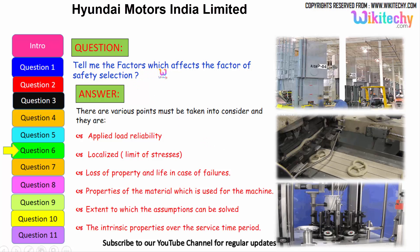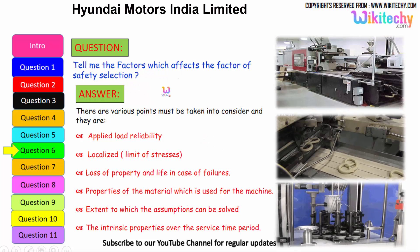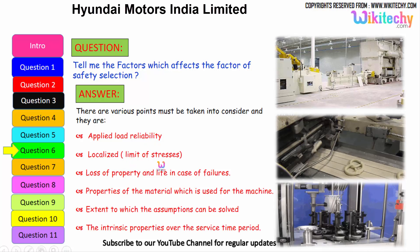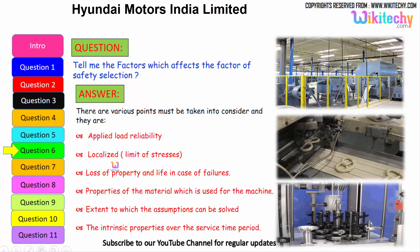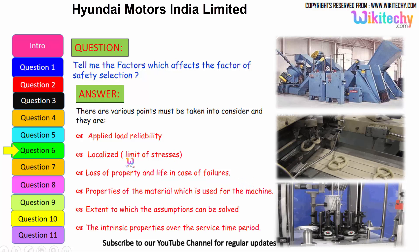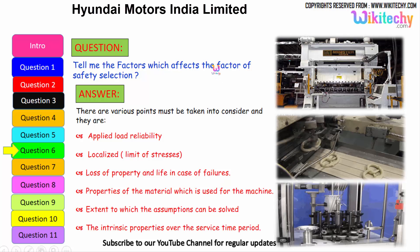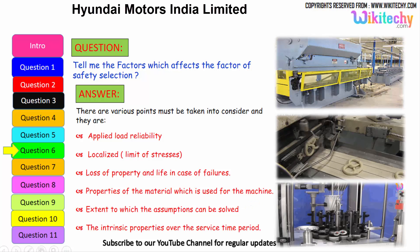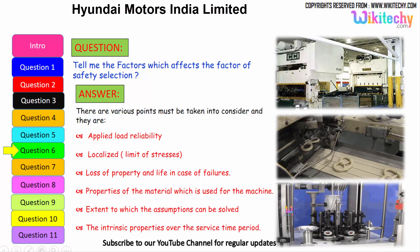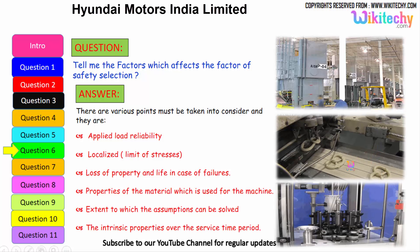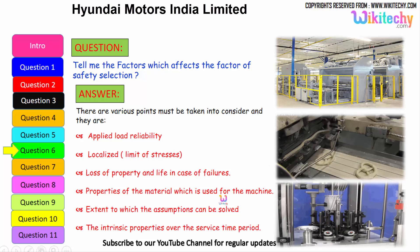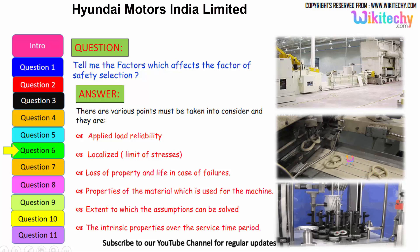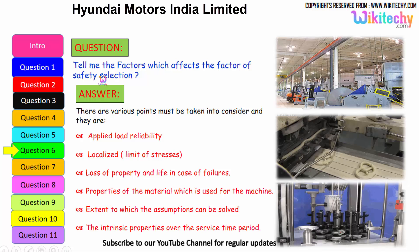Now let us see the factors which affect the factor of safety selection. Key factors include: the applied load reliability; limit of stresses and localized stress; loss of property and life in case of failure; properties of the material used for the machine; the extent to which assumptions can be solved — how much it will extend or compress; and the intrinsic property over the service time period.